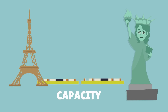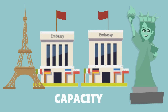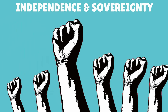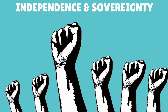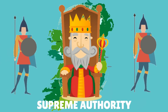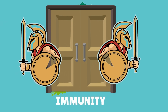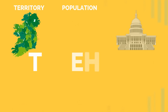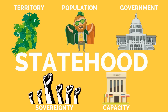The fourth element of statehood is the state's capacity to enter into relations with other states, which is more a consequence of statehood rather than a criterion for it. The last element and the central criterion for statehood is the independence and sovereignty of states, which means that states have supreme authority within their territory and immunity from other states' intervention.